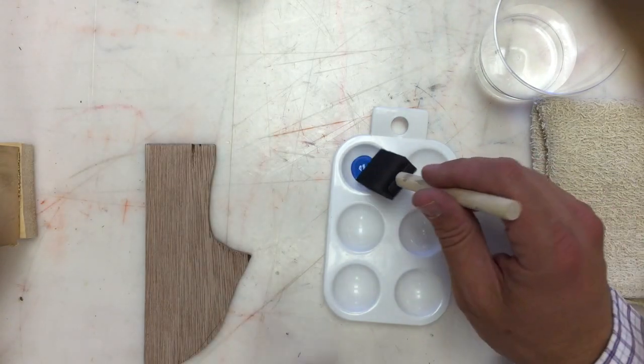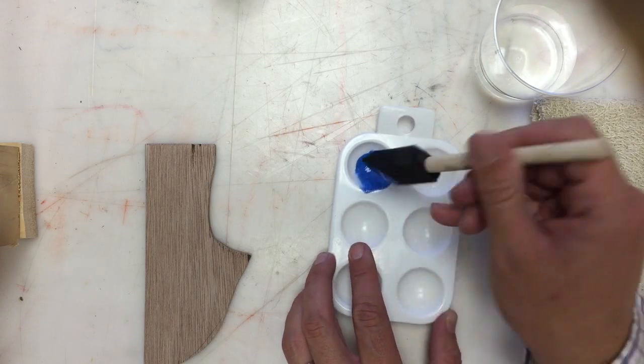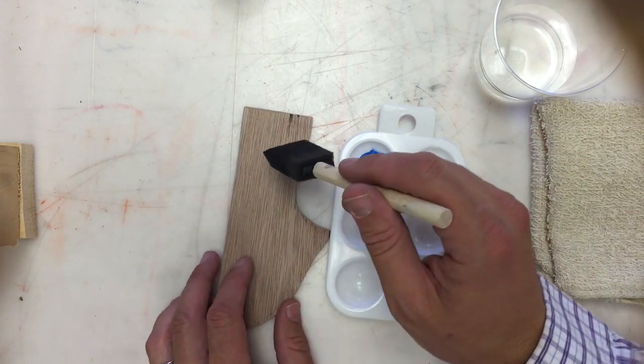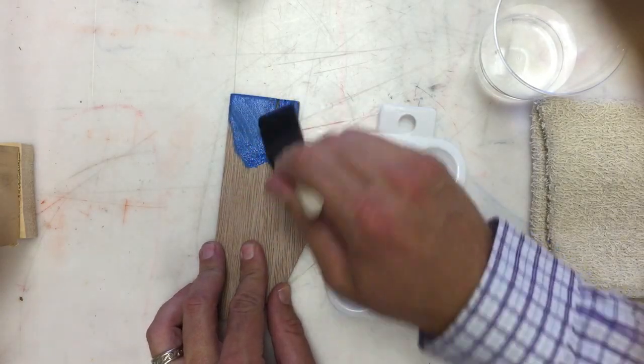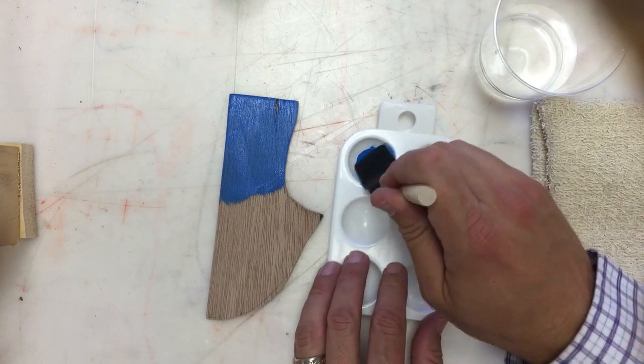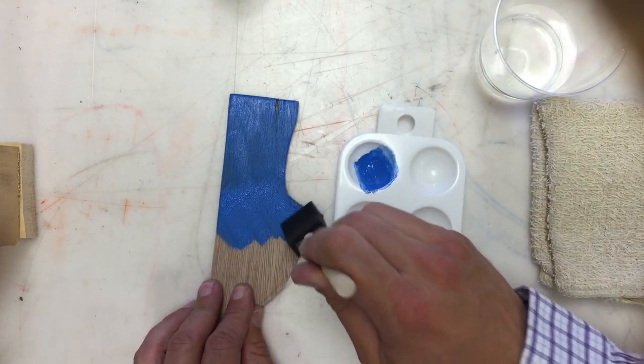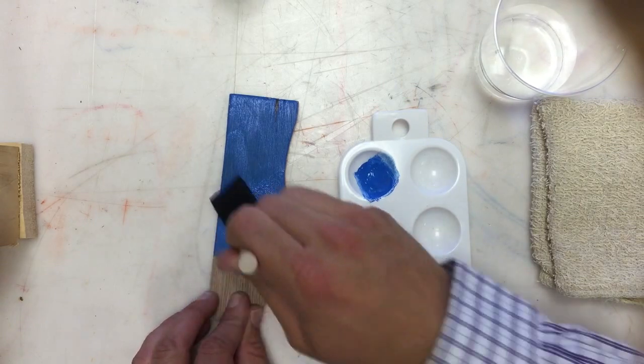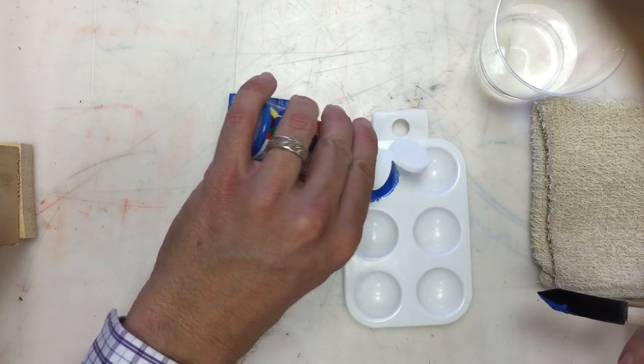I'm going to dip my brush directly in that paint and start to coat my piece with it. I can just add more paint to my brush when I need it. I may need to add a little bit more from the bottle again, just squeezing gently.